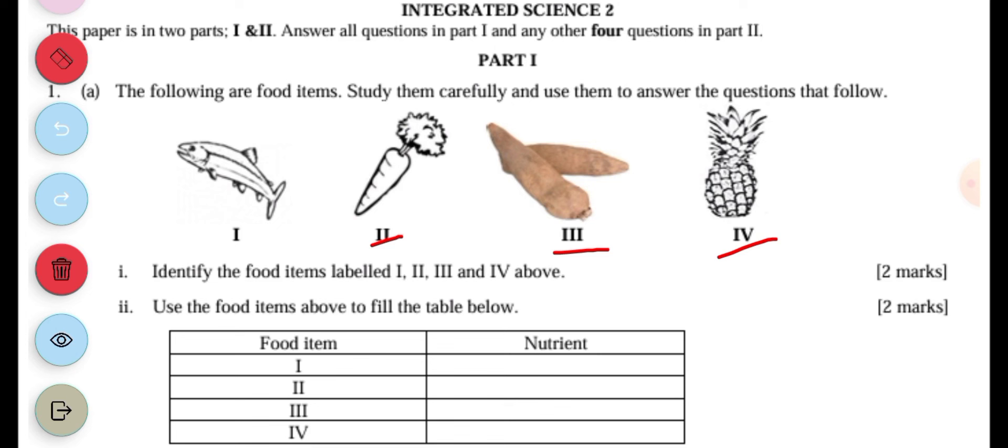Now let's use the food items to fill the table below. I gives you protein, II gives you vitamin A, III gives you carbohydrates, and IV gives you vitamin C.